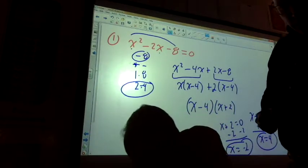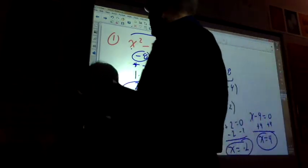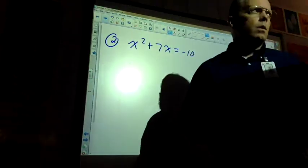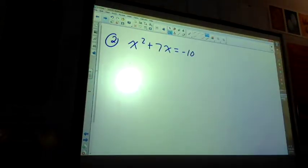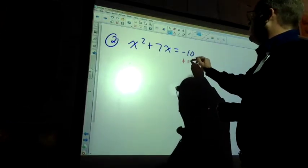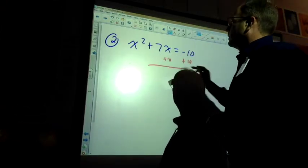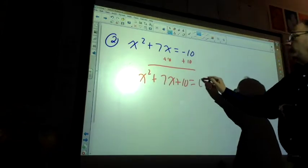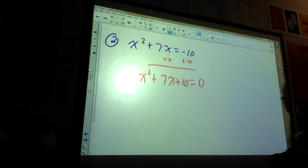Okay? Now, where I saw some people screw up on number two was this. They start factoring this right away. You've got to move it over. You can't have it. It has to be equal to zero. So what you're going to do is you're going to add this 10 here and here. And then you get x squared plus 7x plus 10. It's equal to zero.